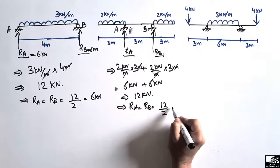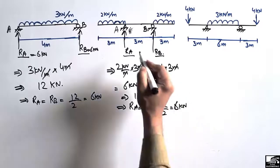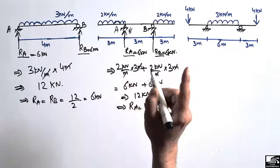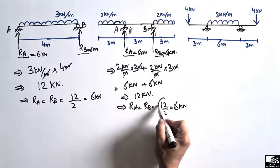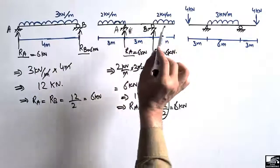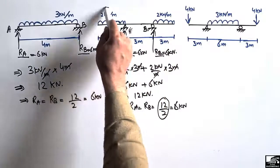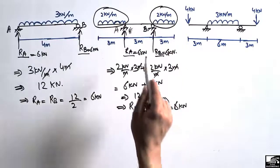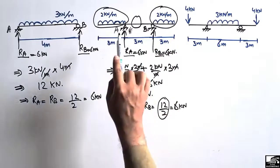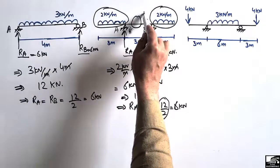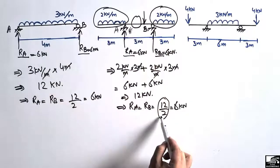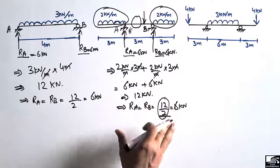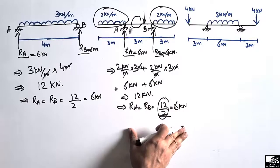Each support takes 6 kN load again. It should be kept in mind that we divide by 2 because there is a symmetric condition on the beam. This load is equal to that load, which is why we divide by 2. If there is some load at the center of the beam at a different distance, we should not divide by 2 but instead use the equilibrium equation method.